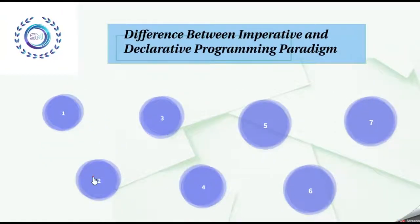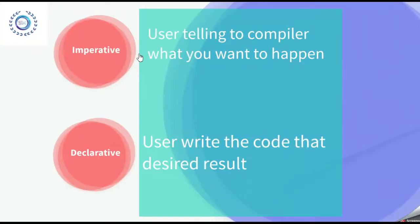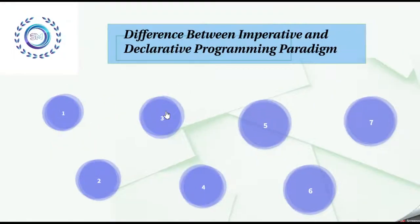The next difference is with imperative programming, you tell the compiler what you want to happen step by step. On the other side, with declarative programming, you write code that describes what you want but not necessarily how to get it.